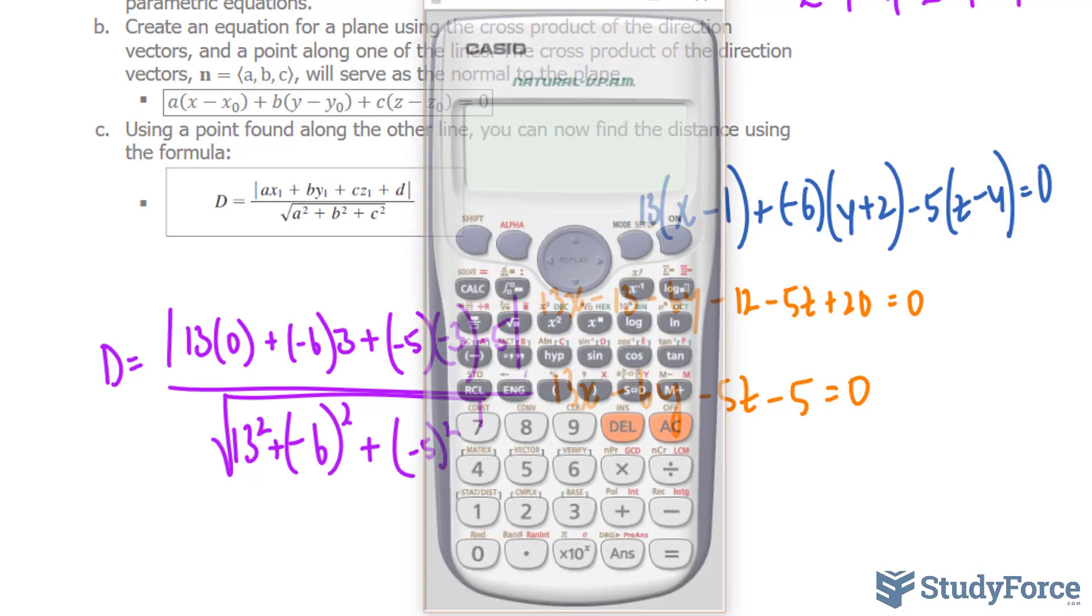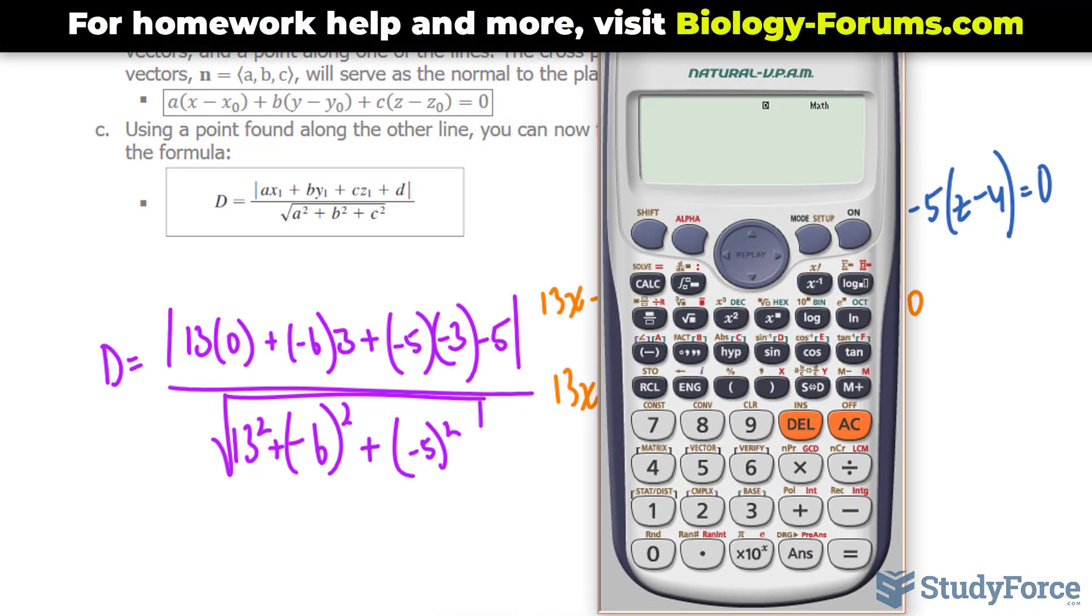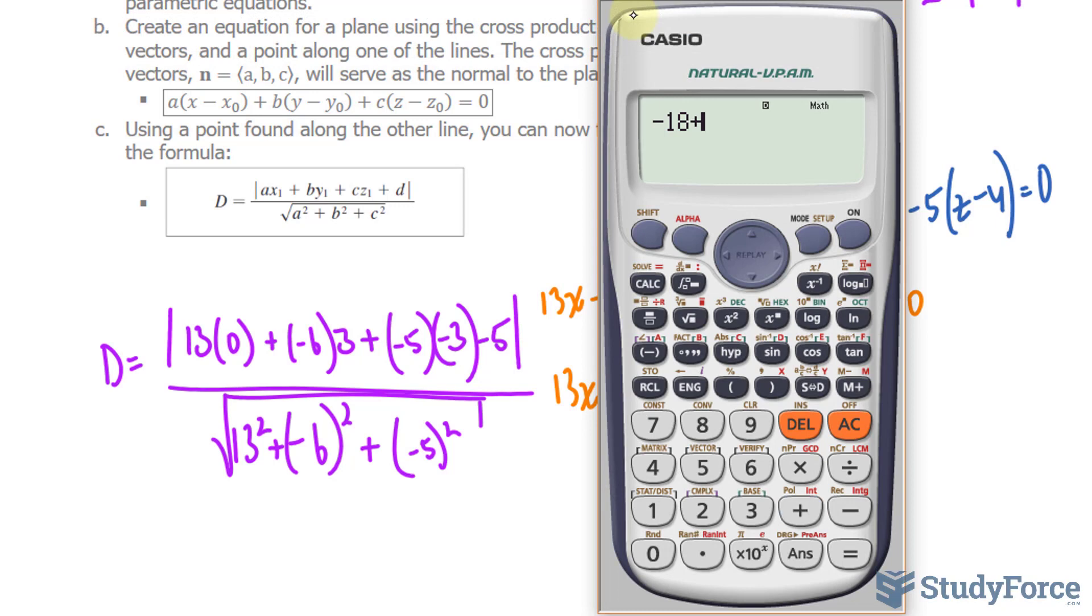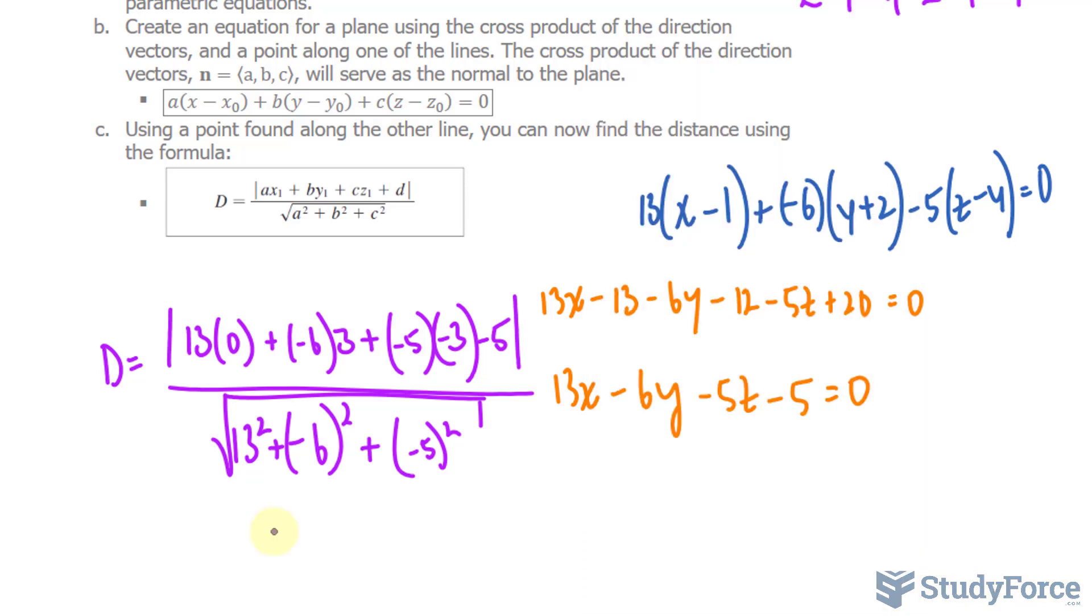Taking the square root of all of that, let's use our calculator. We're finding the absolute of this number, so if it's negative, make sure that it's positive. The first term goes to 0, the next term is negative 18 plus 15 minus 5, gives us negative 8. The absolute of that is 8 divided by the square root of 13 to the power of 2 plus 36 plus 25 gives us a distance of these two skew lines of 0.527 or 0.53 units.